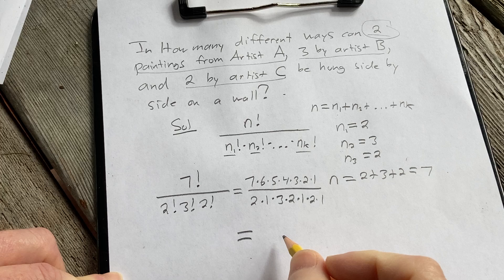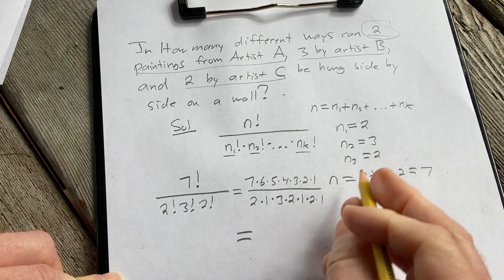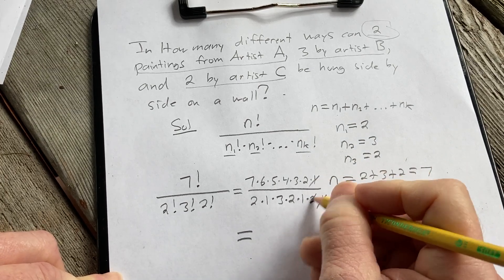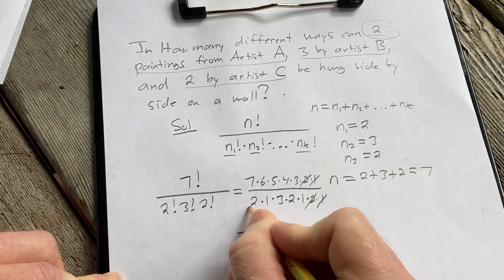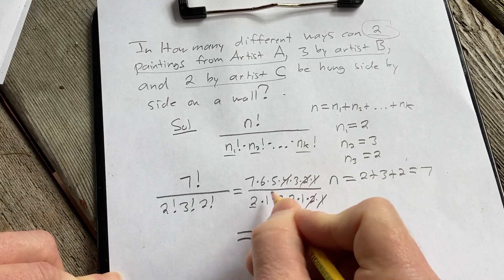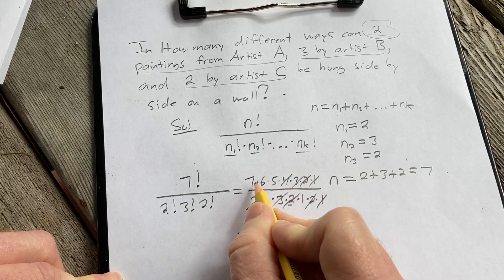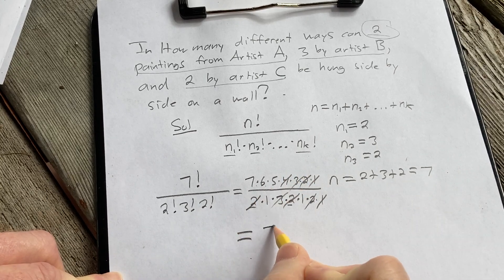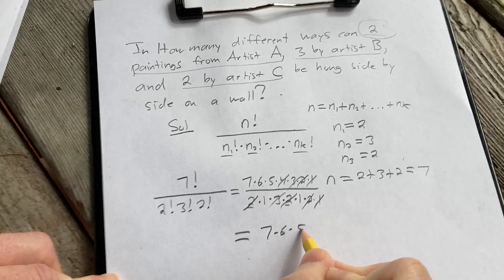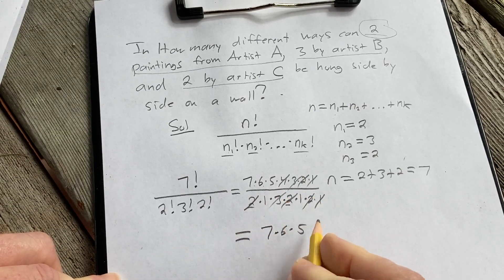So this is equal to, so now we can do some simple cancellation. The 1s basically go away, so do the 2s. You don't care about the 1s here. 2 times 2 is 4, that's going to cancel with this 4. And these 3s will cancel. The 1 doesn't really matter. So you get 7 times 6 times 5 because it's all over 1.